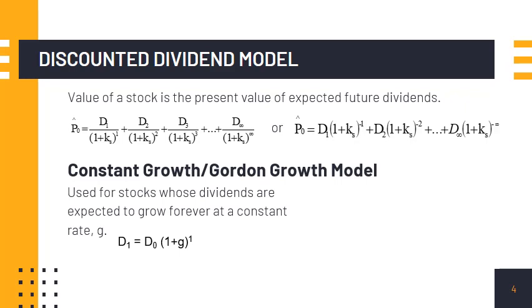d sub 0 is the most recent dividend paid by a company stock. The dividend two years from now, or d sub 2, is computed as d sub 0 times the quantity 1 plus g to the power of 2. Alternatively, it can also be computed as the previous dividend, or d sub 1, times the quantity 1 plus g. The formula to compute for the dividend stream of constant growth stocks is expressed as follows.